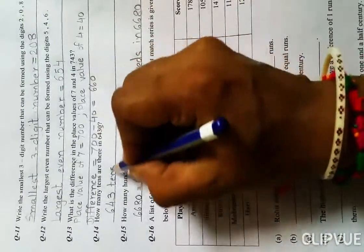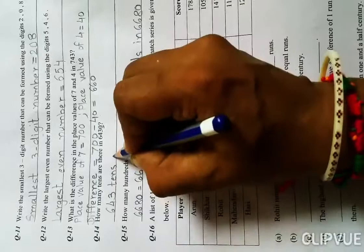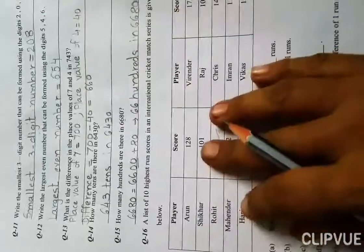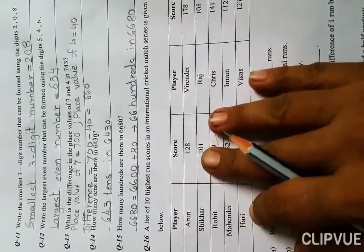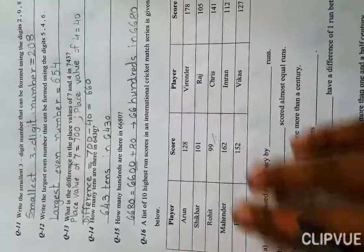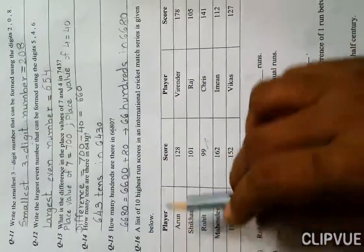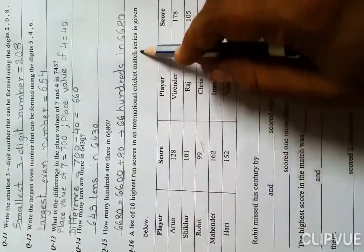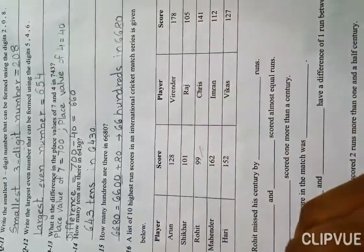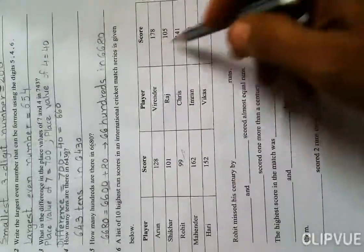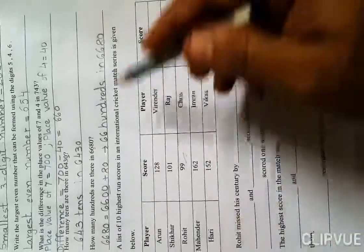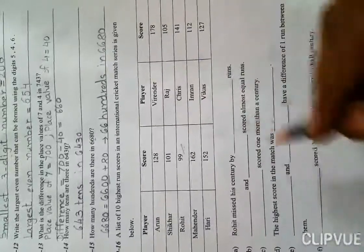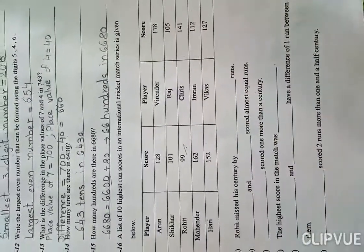You can also write 643 tens in 6430. This way you should fill your worksheet and workbook both. Your workbook has these types of questions. Next question: A list of ten highest run scores in an international cricket match series is given below. The players and their runs from international cricket match are given, and you need to fill in the blanks accordingly.